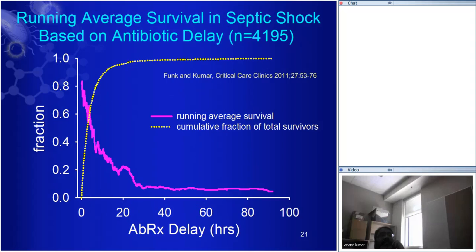This is survival against antimicrobial delay. We took all our cases of septic shock, put them in order of how fast they got antimicrobials, and did a running average of 250 for survival. Survival starts in the mid-80s and then just drops like a stone — a logarithmic decay curve that flattens after about 24 hours, with those late cases likely being misdiagnoses. If you don't get antimicrobial therapy within the first 12 hours, only 10% of survivors occur after that.